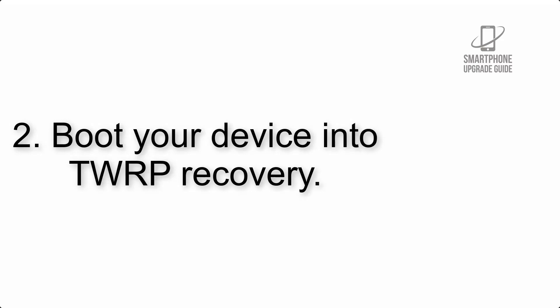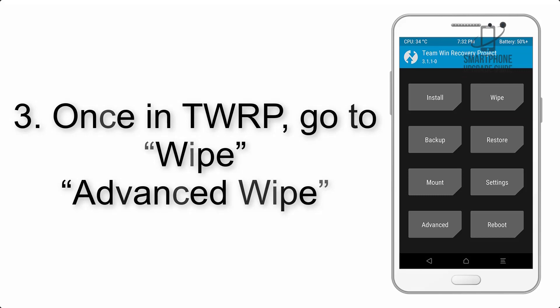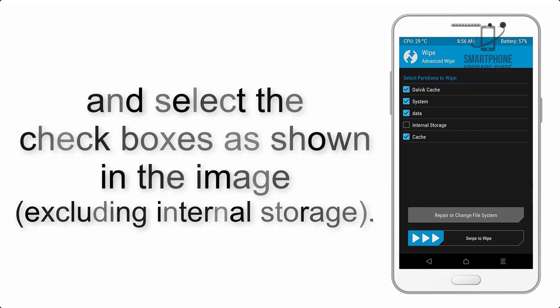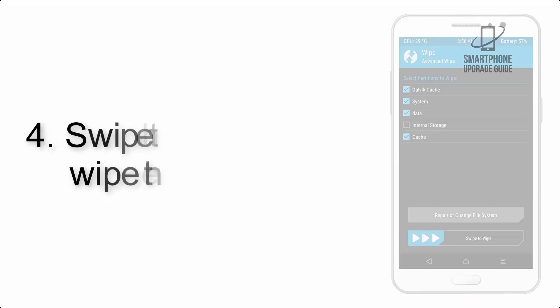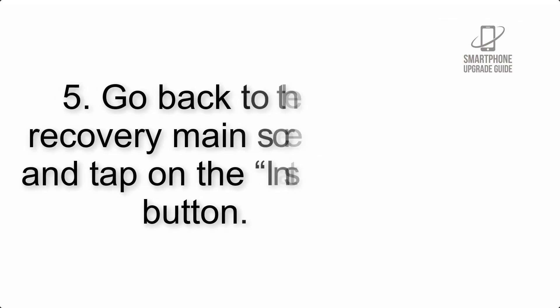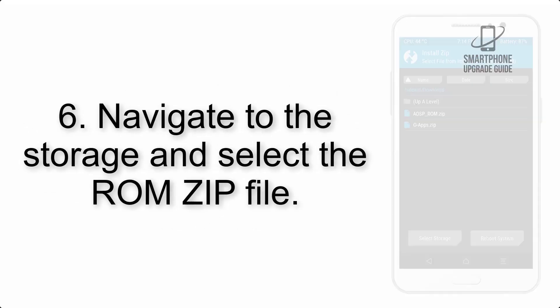Step 2: Boot your device into TWRP recovery. Once in TWRP, click on Advanced Wipe and select the checkboxes as shown in the image, excluding internal storage. Step 4: Swipe the button to wipe the device. Step 5: Go back to the recovery main screen and tap on the Install button.